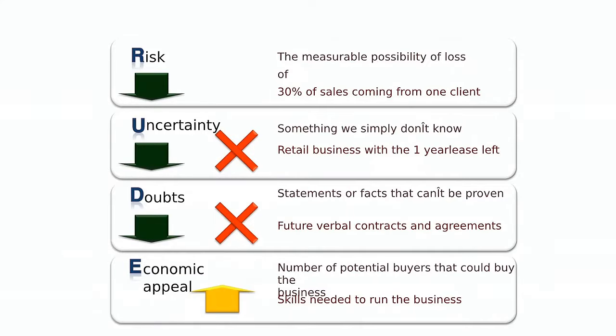Another big source of uncertainty in businesses is the lease. If you've only got one year left on a lease, what's going to happen after that? Just because the lease was renewed three times before doesn't mean it will be renewed a fourth time. That creates uncertainty — you need to minimize it, but even better, try to eliminate it entirely.